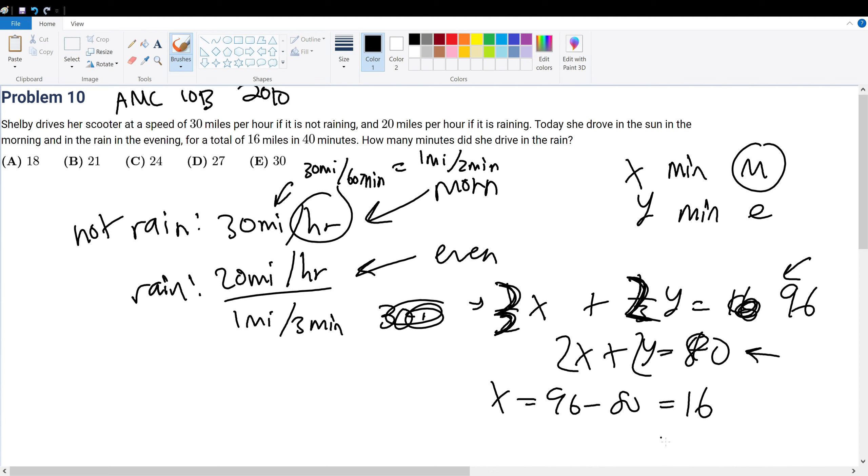So x is where she drove in the morning, and that's no rain. So how many minutes did she drive in the rain? Well, that's just 40 minutes minus 16, which will give 24, arriving at answer choice C as our answer.